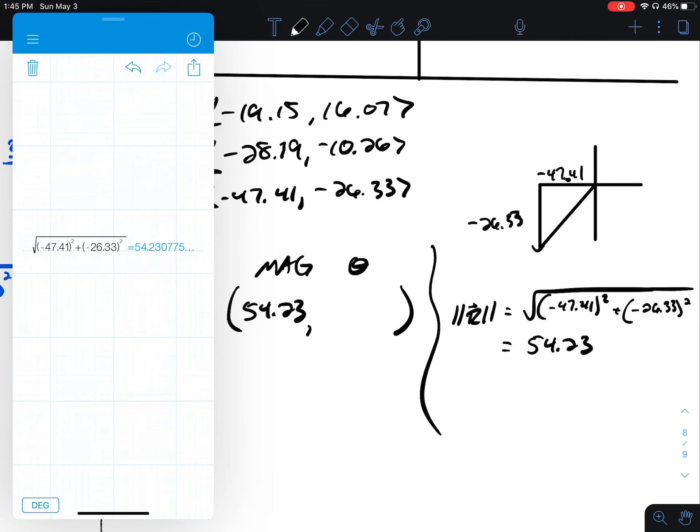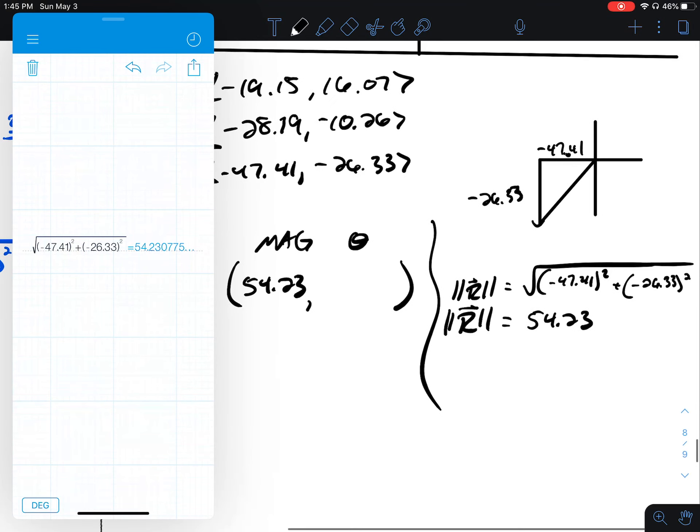Now to find the angle, I've got to be careful because if I put in theta is tangent inverse of, the signs would cancel so I don't need to put the two negatives in, y over x.